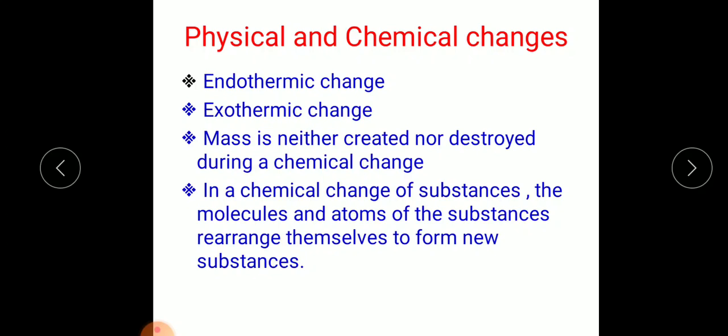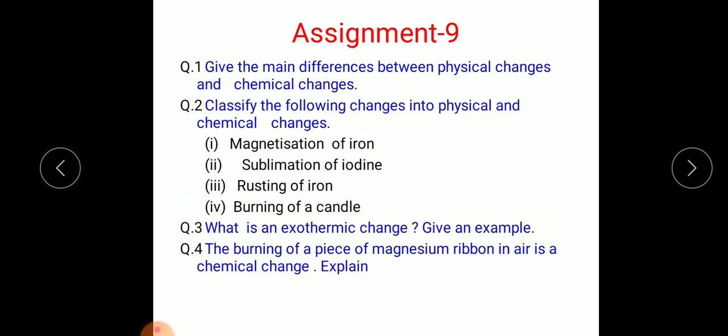So based on today's topic about physical and chemical changes, here is an assignment for you - Assignment Number 9. Question 1: Give the main differences between physical changes and chemical changes. You can mention at least three differences. Question 2: Classify the following changes into physical and chemical changes: magnetization of iron, sublimation of iodine, rusting of iron, burning of a candle.